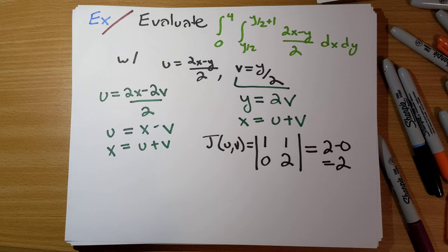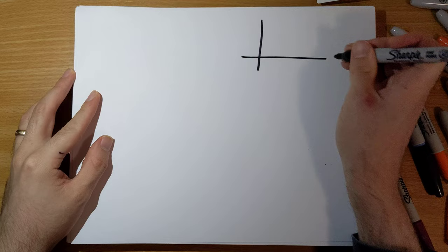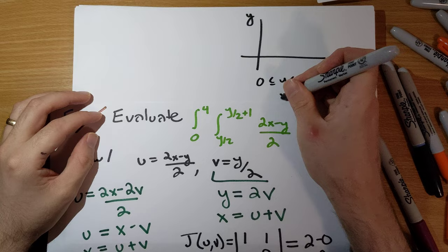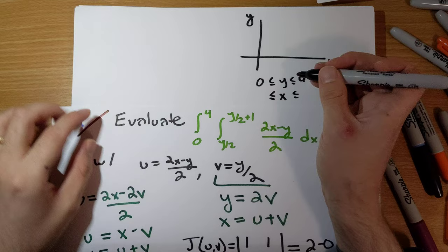Okay, so let's talk about bounds here. So bounds in the xy plane. So we see here y runs from 0 to 4. And x runs from y over 2 to y over 2 plus 1.